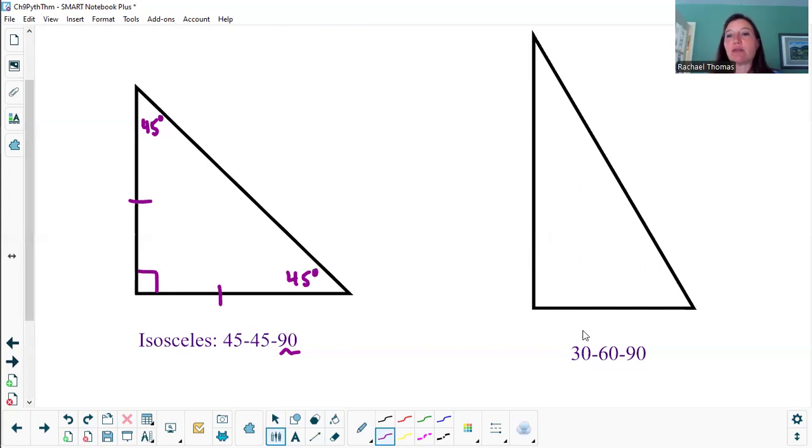This other special right triangle we call 30-60-90, so its angles are 90 degrees for the right angle, then 60 for the bigger one, and 30 for the smaller one. Why it's special is because it's actually half of an equilateral triangle. If I had another copy of this triangle right next to it, it would actually make an equilateral triangle altogether.